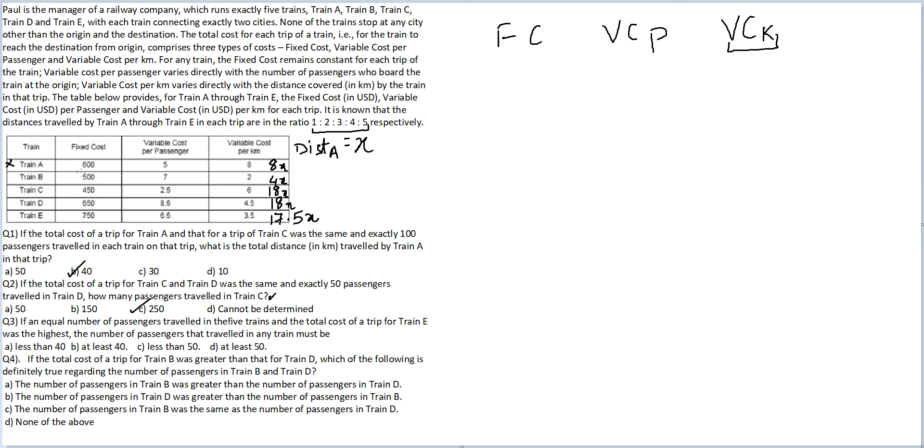Can you say that train E will always cost more than train A if the number of passengers are equal? Fixed cost is higher, variable cost per passenger is higher, and variable cost per kilometer 17.5X and 8X. E will always cost more than A. So A is not even necessary for our comparison. Let's look at E and B: 750 and 500, 6.5 and 7, 3.5 and 2, 17.5X and 4X. In this case, variable cost per passenger is higher for B, lower for E. Which means if you added more and more passengers, the cost for B would go up and E would become lower. So I know the upper limit we're going to place in the number of passengers is going to be... The options here are: less than 50, at least 40, less than 40, at least 50. The answer can only be this.